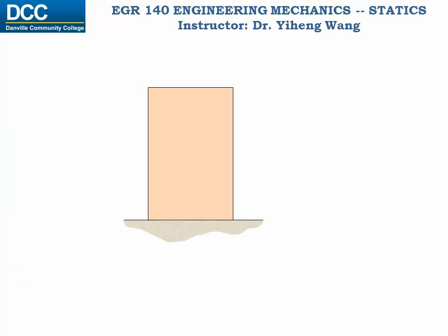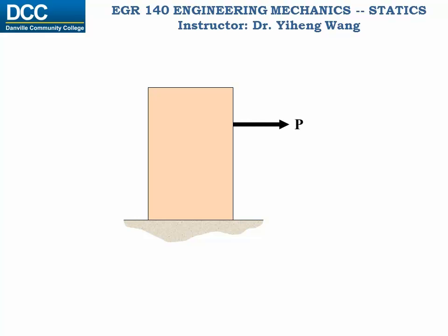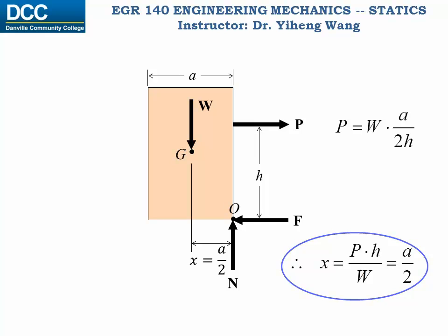Sometimes we encounter situations where we want to move a relatively tall object. From experience we know that if we place the force too high, the object will tip over. From analysis, if the calculated x equals half of A, which is the width of the box, that places point O at the edge of the box, meaning the box is about to tip over.